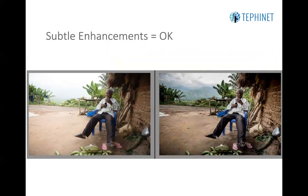Subtle enhancements are okay. As you see here, you have Ferdinand sitting in his chair, but you can't see the mountains in the background — they're barely visible, and there's a lot of blown-out color in the ground. Yet by using shadows and lightening the highlights in Adobe Lightroom, I was able to bring the mountains that exist in this image back into the image without adding anything. So again, nothing is changed or altered — it's just enhanced.